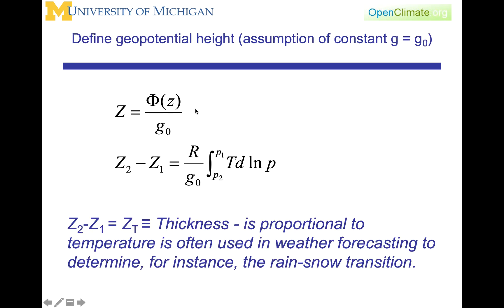We're now going to define a quantity called geopotential height, where we're going to take the geopotential and divide it by g0. Again, we can take an integral here, and say that z2 minus z1 is equal to R over g0, because we're going to use g0 as a constant, integral from p2 to p1, temperature d log of p. z2 minus z1, since we've now turned it into a unit that is meters by dividing it by this acceleration, is called thickness.